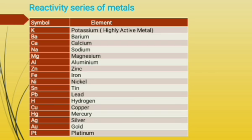In the metal reactivity series, sodium, potassium, barium, calcium, magnesium, aluminium, zinc, iron, nickel, tin, lead, hydrogen, copper, mercury, silver, gold, and platinum are arranged in descending order of decreasing reactivity. The elements placed at the top are most reactive and those at the bottom are least reactive. As we move from top to bottom, reactivity of elements decreases, and as we move from bottom to top, reactivity of elements increases.